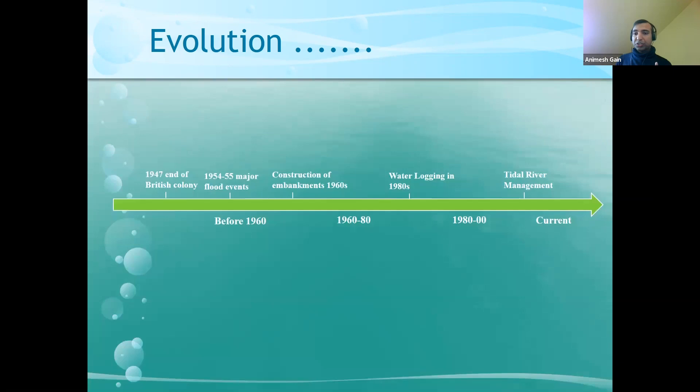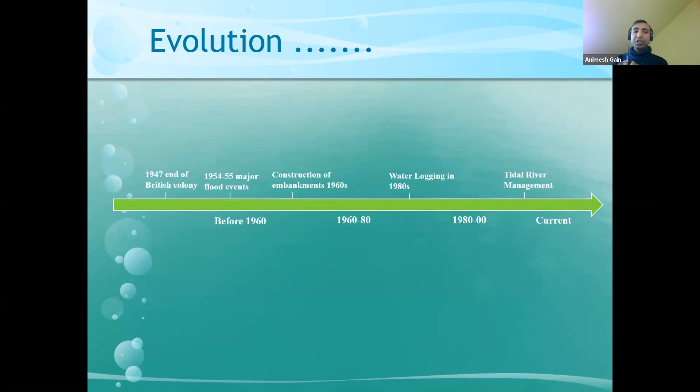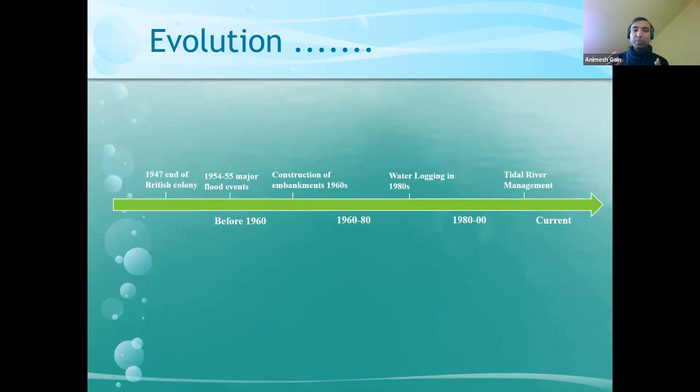Before 1947, Bangladesh was part of the British colony. During that time, there were no embankments to protect against flooding. Local people managed embankments during the dry season to grow crops. The British emperor provided ownership to landlords to manage specific areas of land.